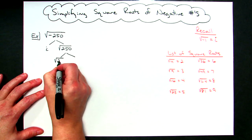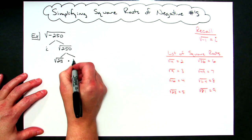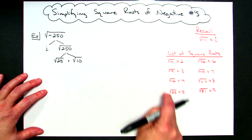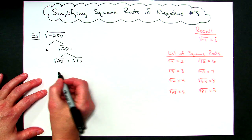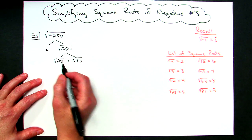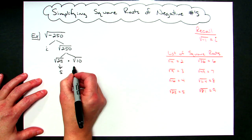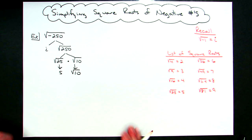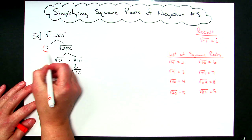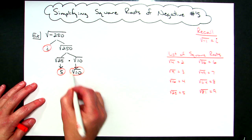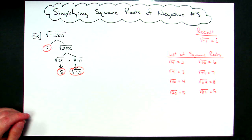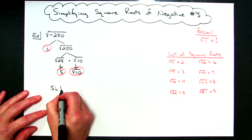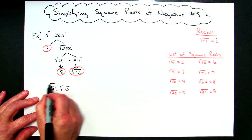So square root of 25 times square root of 10 — 25 times 10 is 250. I picked the biggest one from the list to make the tree as short as possible. The square root of 25 is 5, and I can't simplify square root of 10 any further. So I've got i and 5 out front, with square root of 10 remaining. The simplified answer is 5i√10.